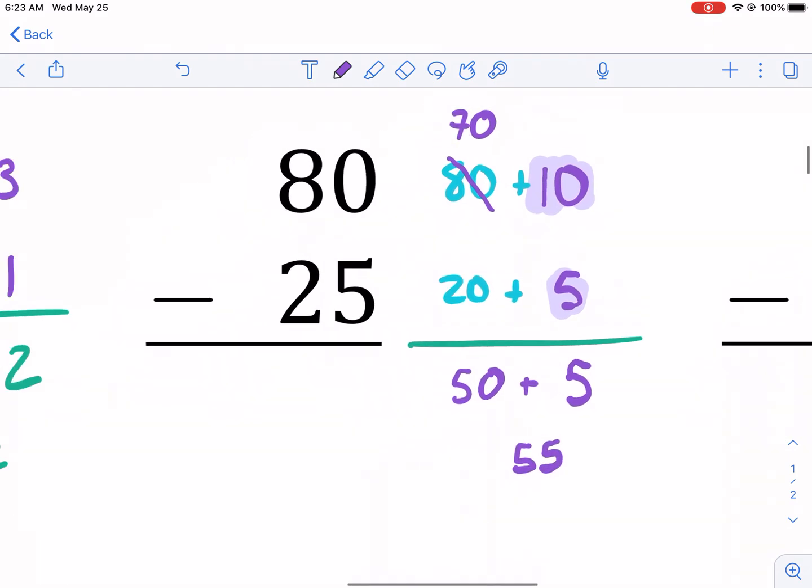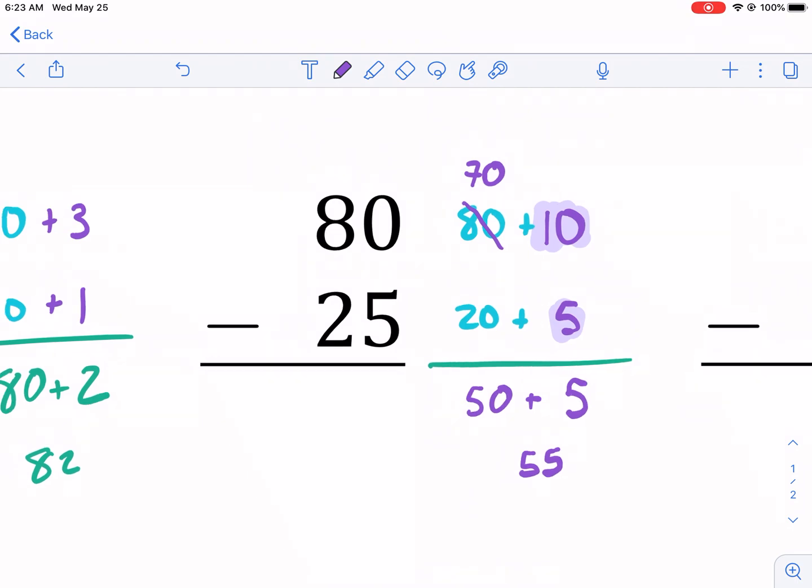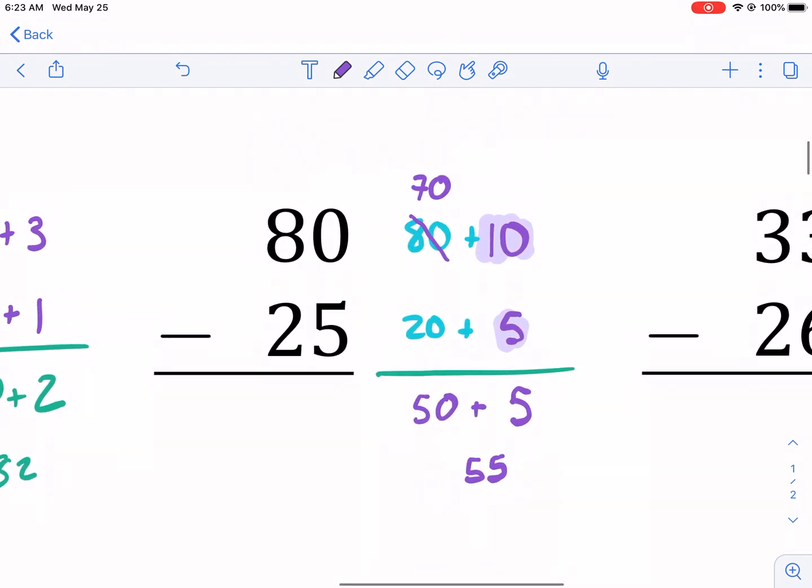What does it look like in the standard algorithm? And you're probably like, that's a really complicated way to do it. I just want to give you background of why we borrow. Again, 0 minus 5 can't do it.